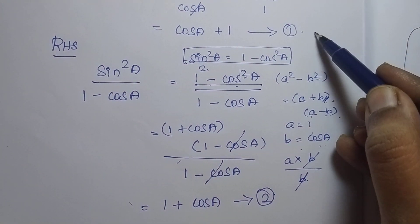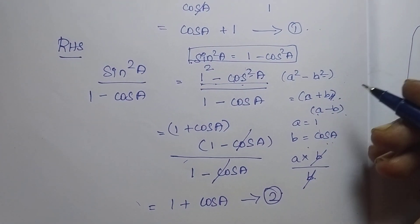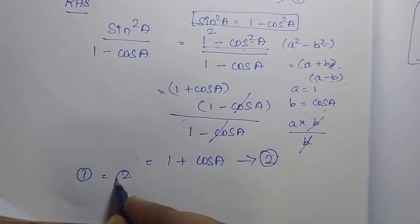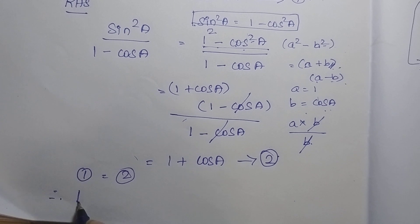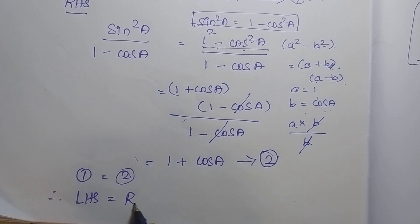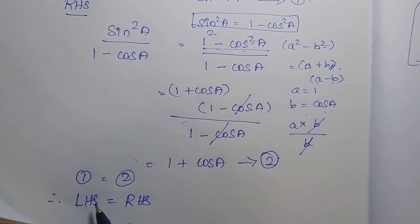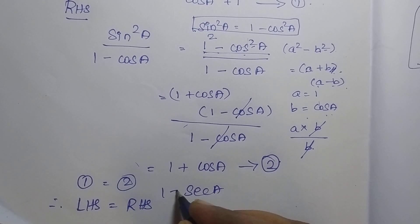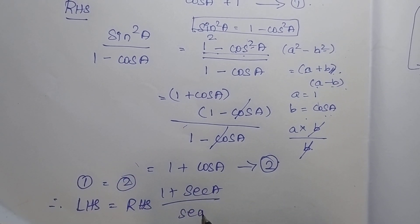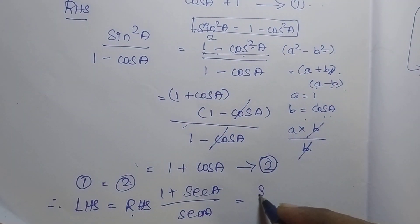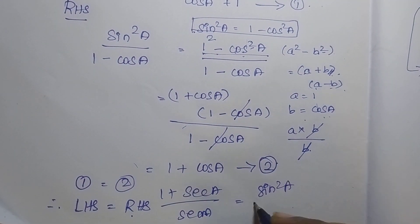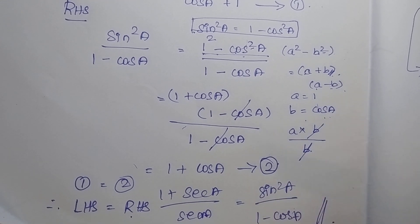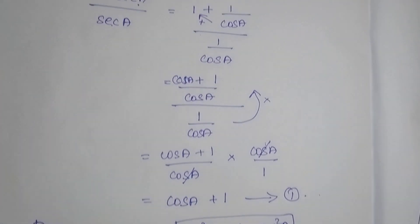Let's check that equation 1 and equation 2 are the same. Therefore, LHS is equal to RHS. LHS is nothing but 1 plus secant A divided by secant A. RHS is nothing but sin square A divided by 1 minus cos A. So both are equal. Hence, this equation is proved.